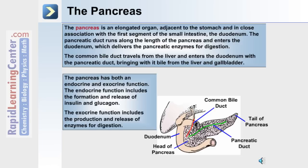The pancreas has both an endocrine and exocrine function. Its endocrine function includes the formation and release of insulin and glucagon for the regulation of blood glucose levels. Its exocrine function, which is associated with the digestive system, is the production and release of enzymes for digestion.